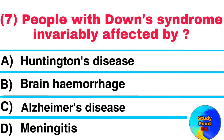Question: People with Down syndrome are invariably affected by? Answer: Alzheimer's disease.